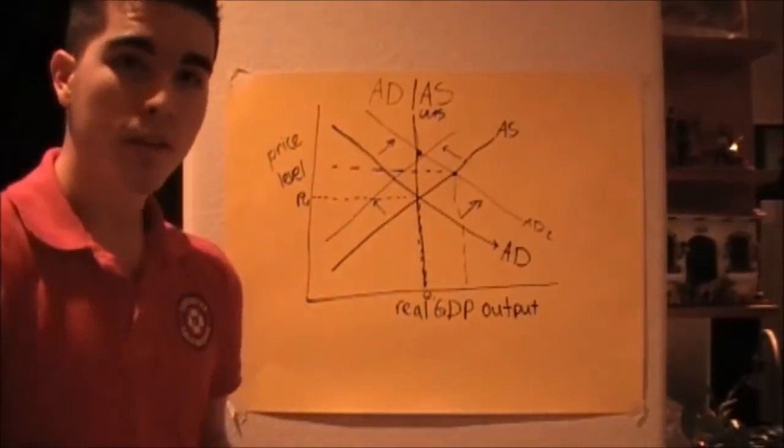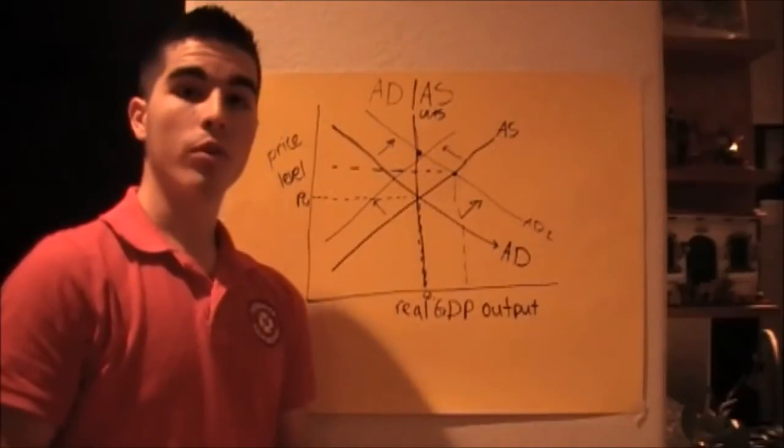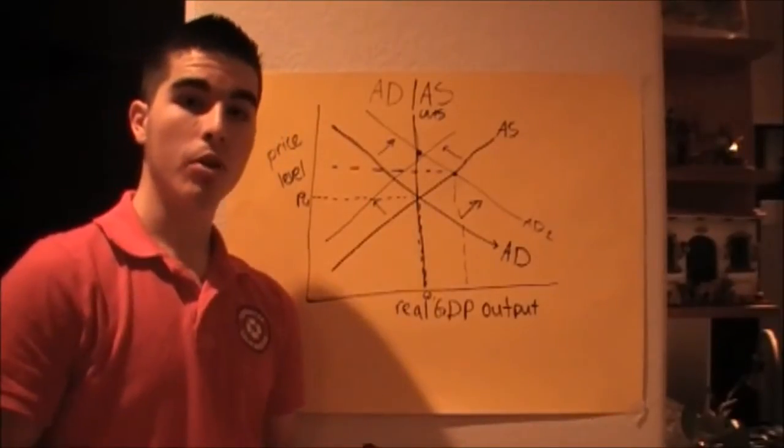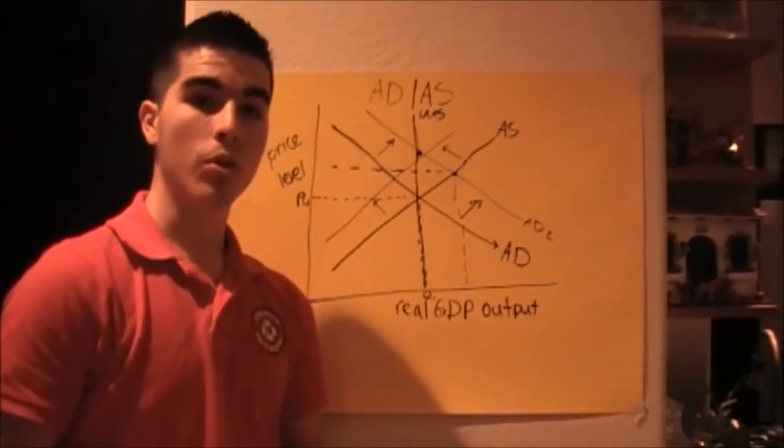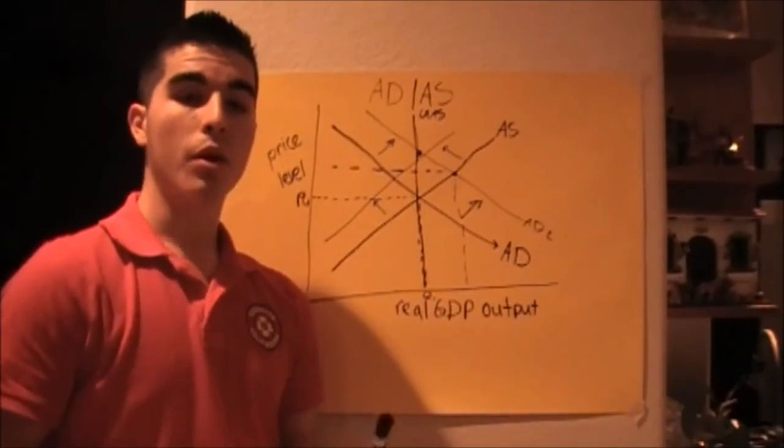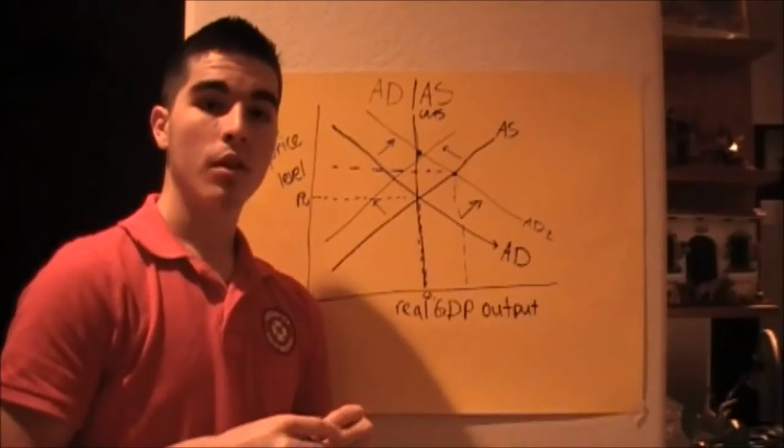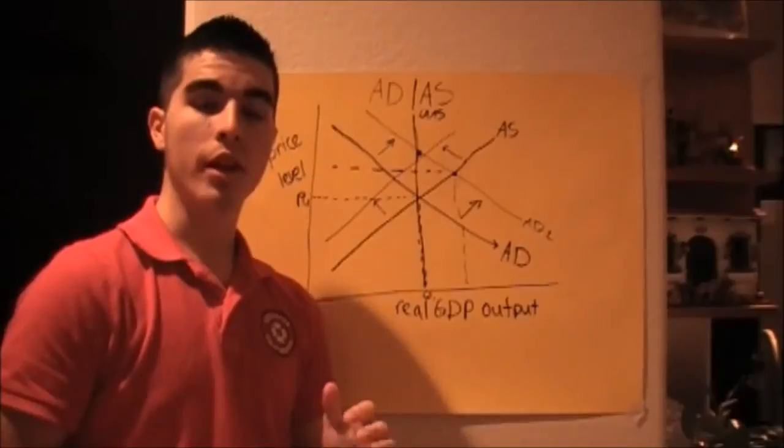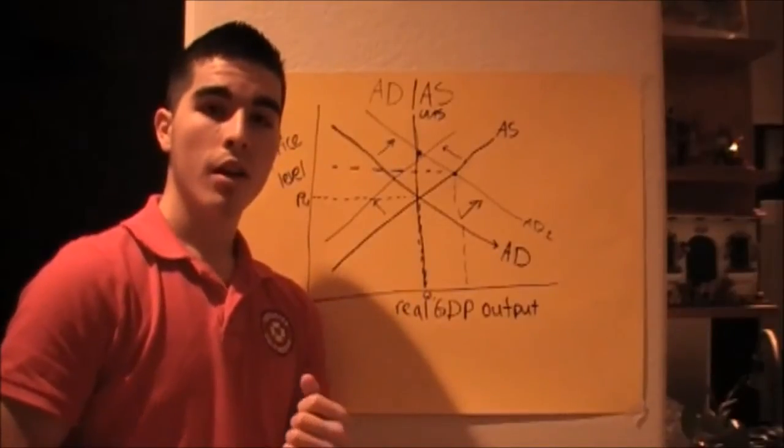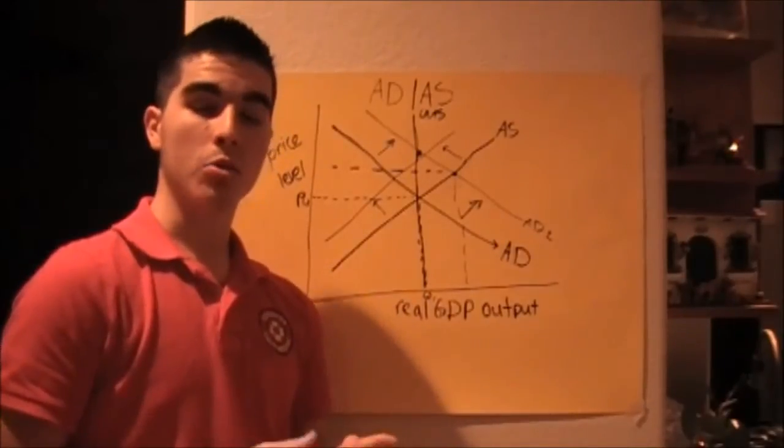Hi guys, it's me again. Really quickly I'm going to be going over the ADAS graph terms. And to start off, we're going to go with the AS, which stands for aggregate supply. And the components of aggregate supply would be cost of production, which if there's a lower cost, then aggregate supply moves to the right. And if there's a higher cost, aggregate supply moves to the left.